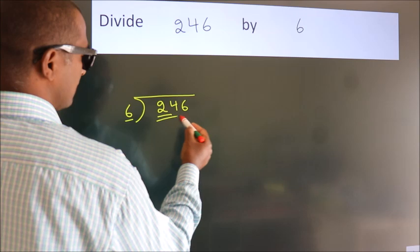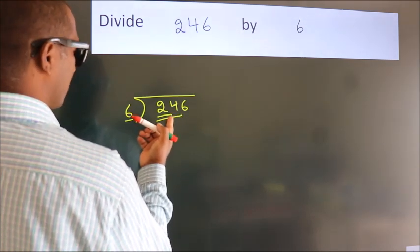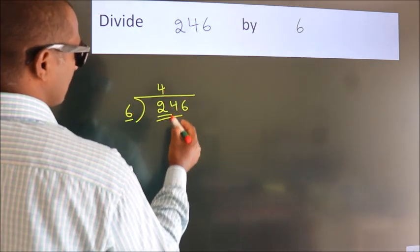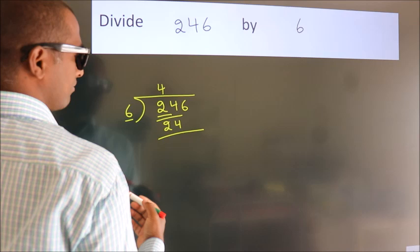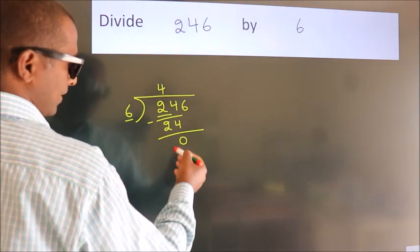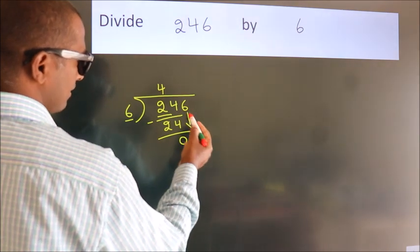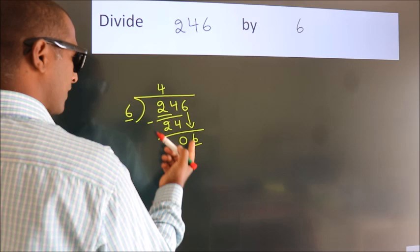So we should take two numbers: 24. When do we get 24 in the 6 table? 6 fours are 24. Now we should subtract. We get zero. After this, bring down the next number: 6 down. So 6, when...